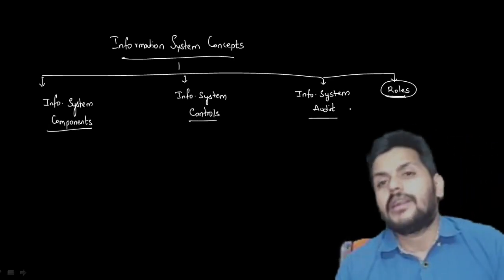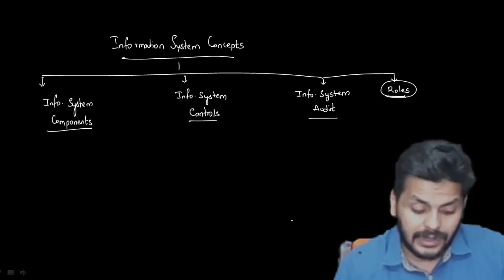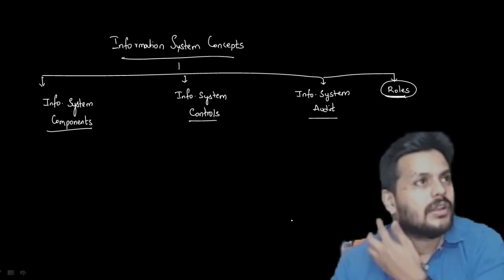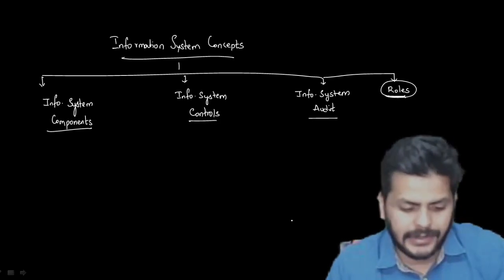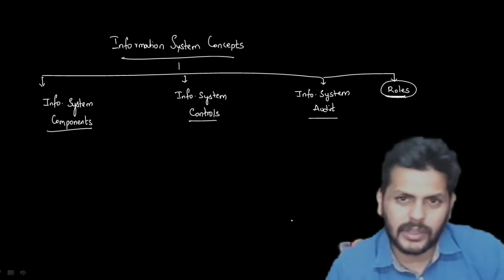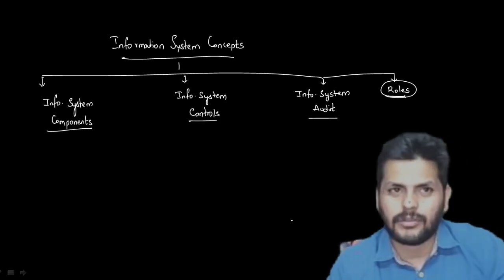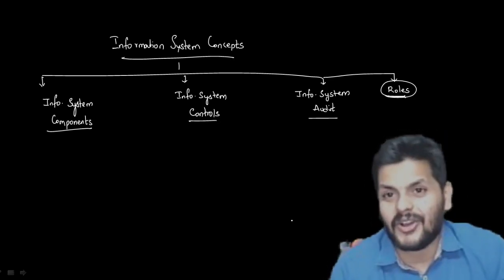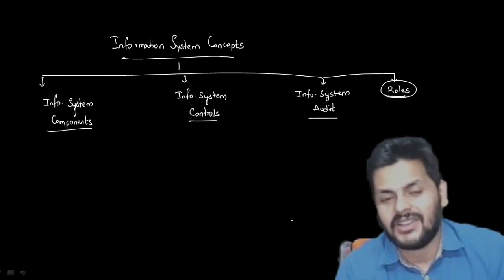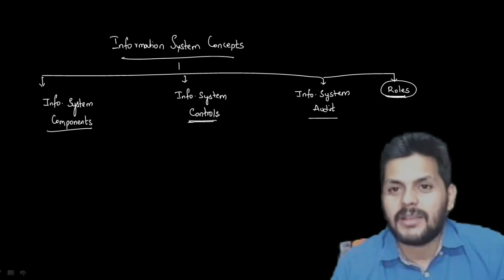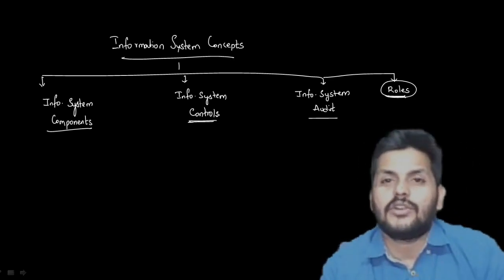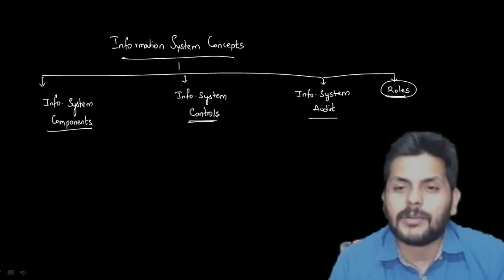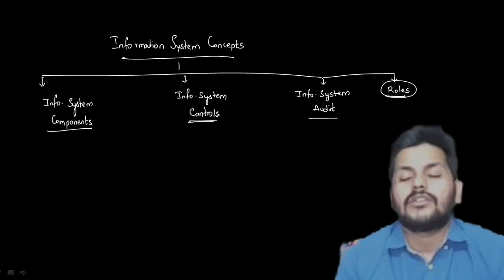You will learn something very interesting here called computer-aided audit tools or computer-assisted audit tools. This chapter is important not only from the perspective of marks in the exam, but also because you are using information systems. We should be security conscious — for example, don't use loose passwords and frequently change your passwords, though password is not the only thing controlling security; there are multiple other things.